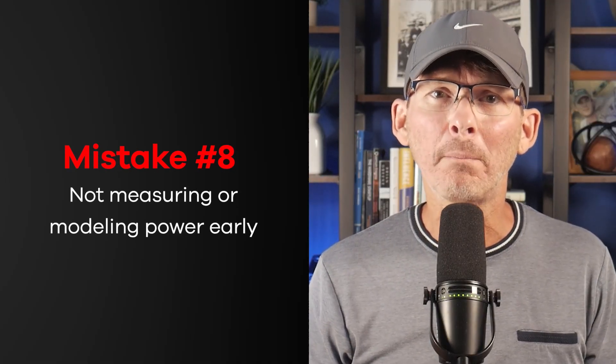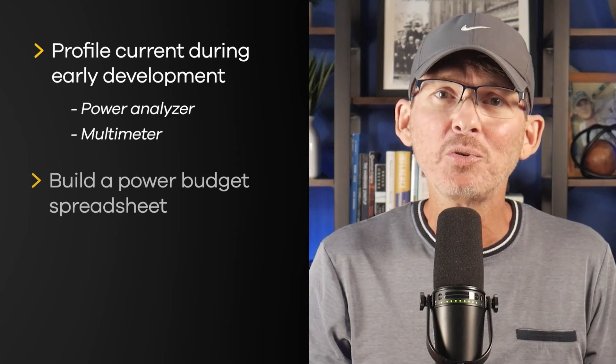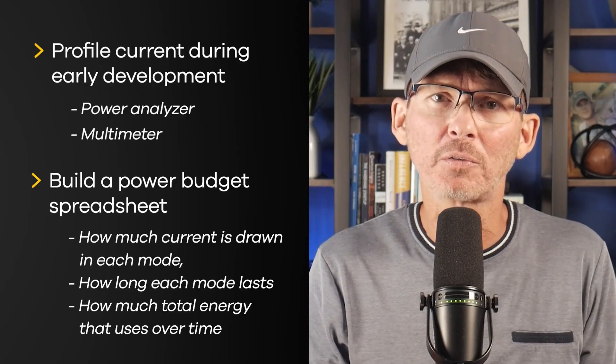Make sure all GPIOs are explicitly configured for low power states and isolate powered-down subsystems properly, including using proper logic level translators where necessary. Mistake number eight: not measuring or modeling power early. If you aren't measuring your product's current consumption early in development, you're flying blind. Many teams build the full system and only check battery life during final testing — but then it's often too late to fix. You should be profiling current during early development using a power analyzer or at least a multimeter, and you should build a power budget spreadsheet covering current drawn in each mode, duration of each mode, and total energy over time. Modeling this helps you see where the energy is actually going.